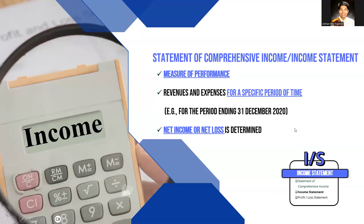Now that we're clear on the overview, let's take a deep dive into each statement, starting with the income statement. The income statement — or more formally, the statement of comprehensive income — is a measure of performance. How good is your performance for a specific period of time? Because it covers an entire period, your income statement header will always read 'for the period ending December 31, 2020' — it's performance across an entire period.